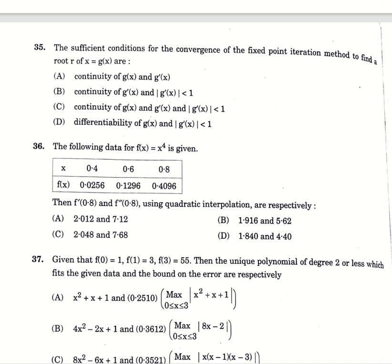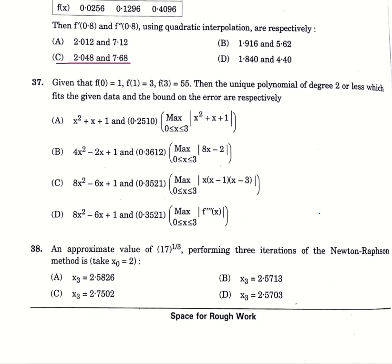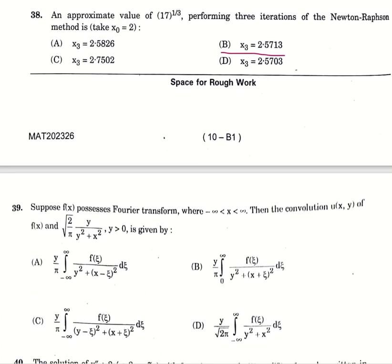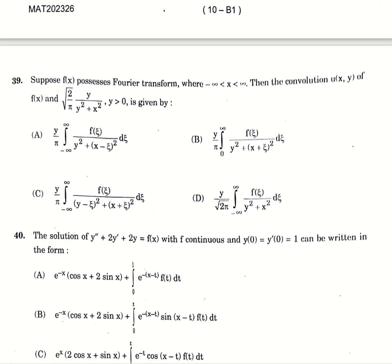Thirty-fifth question, sufficient condition for convergence of fixed point iteration method to find root R of X equals G of X, R continuity of G of X and G dash of X, option number A. Thirty-sixth, the following data F of X equals X power 4 is given by option number C. Thirty-seventh, we have to find for the given data whether this fits the data and the bound on the error. Option number C. Thirty-eight, approximate value of 17 power 1 by 3. When we perform three iterations for Newton-Raphson's method, we get answer X3 equals 2.7513, option B. Thirty-ninth, suppose F of X possesses Fourier transform where X lies between minus infinity and infinity. The convolution of F of X is given by F of X and root 2 by pi Y by Y square plus X square, Y greater than 0 is given by option A.